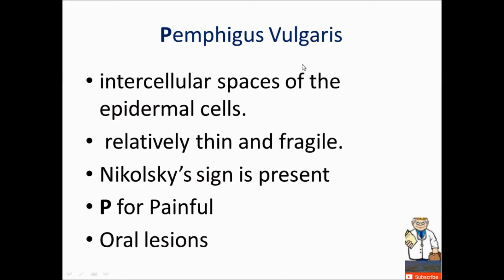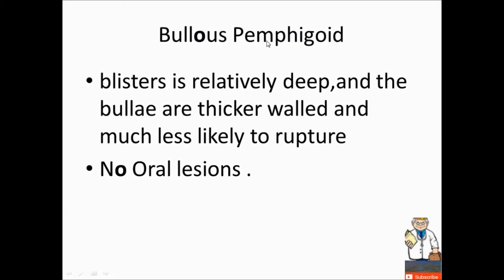Pemphigus vulgaris: P for painful, and it involves mucosal surfaces — oral lesions are present. It involves intercellular spaces of epidermal cells. Blisters are relatively thin and fragile. Nikolsky sign is positive. As compared to bullous pemphigoid: no oral lesions, blisters are relatively deep, bullae are thicker and much less likely to rupture.